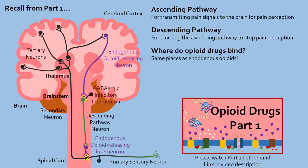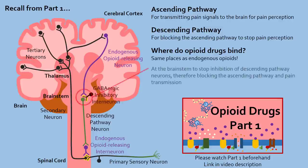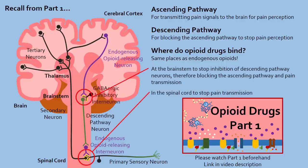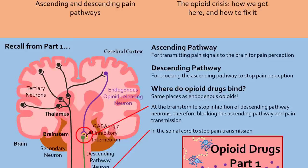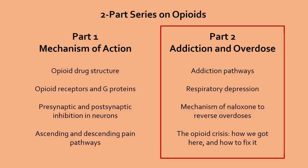In Part 1, we discussed how opioids relieve pain by turning off certain neurons in our brain and spinal cord, activating the descending pathway of pain inhibition and deactivating the ascending pathway of pain sensation. In Part 2, we are going to apply these concepts of neurobiology to explain why opioids can be so addictive and potentially dangerous, resulting in the opioid epidemic currently in North America.